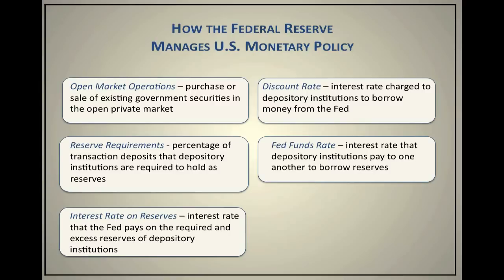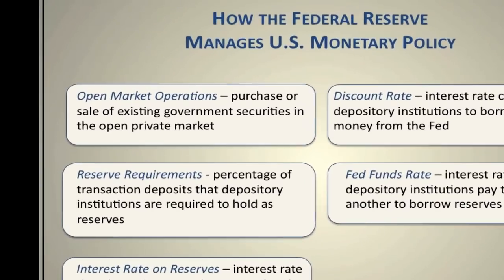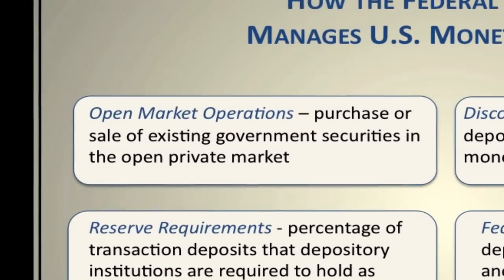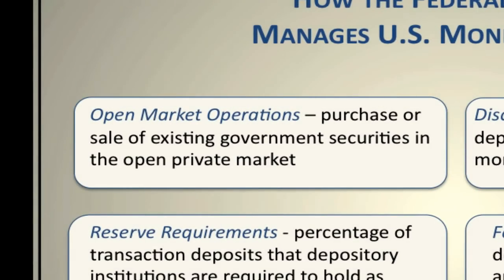I will highlight some of the different things the Federal Reserve can do, and in a subsequent video I'll provide more detail into each specific tool and how it affects monetary policy. The first tool the Federal Reserve has at its disposal is what is known as open market operations. These are used relatively frequently. The Federal Reserve recently announced it was going to institute another round of quantitative easing, known as QE3 — three being the number of rounds of quantitative easing that have been in place.